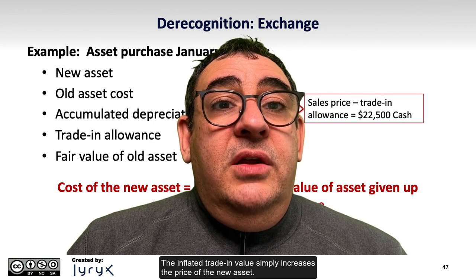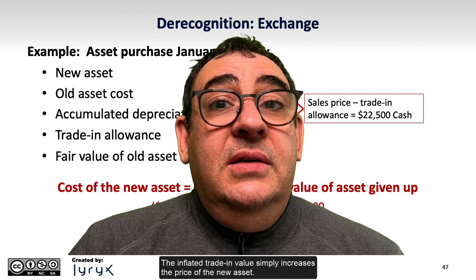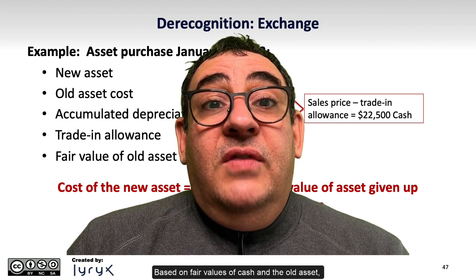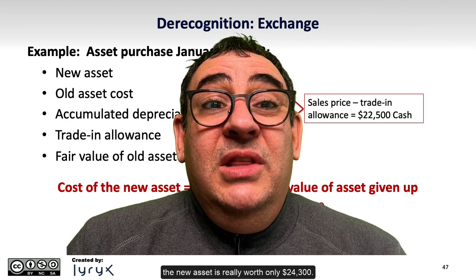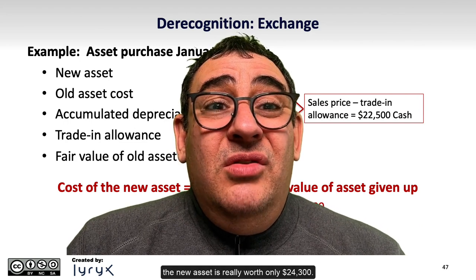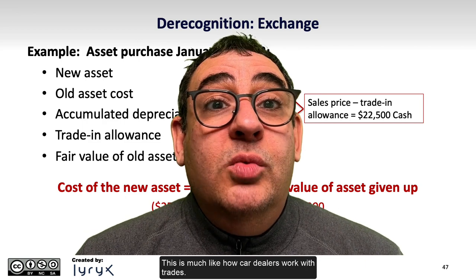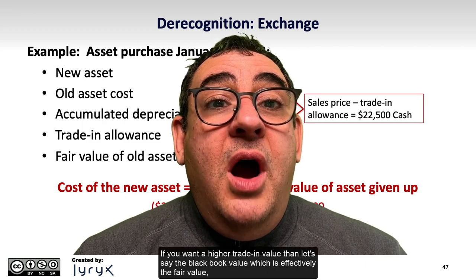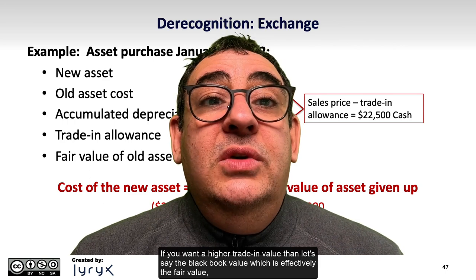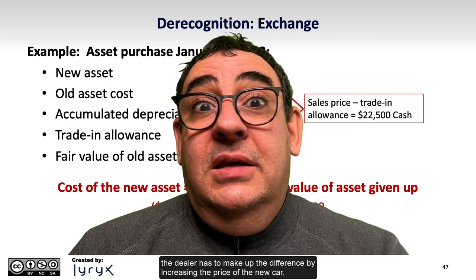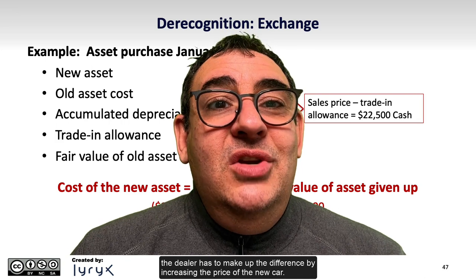The inflated trade-in value simply increases the price of the new asset. Based on fair values of cash and the old asset, the new asset is really worth only $24,300. This is much like how car dealers work with trades. If you want a higher trade-in value than the black book value, which is effectively the fair value, the dealer has to make up the difference by increasing the price of the new car.